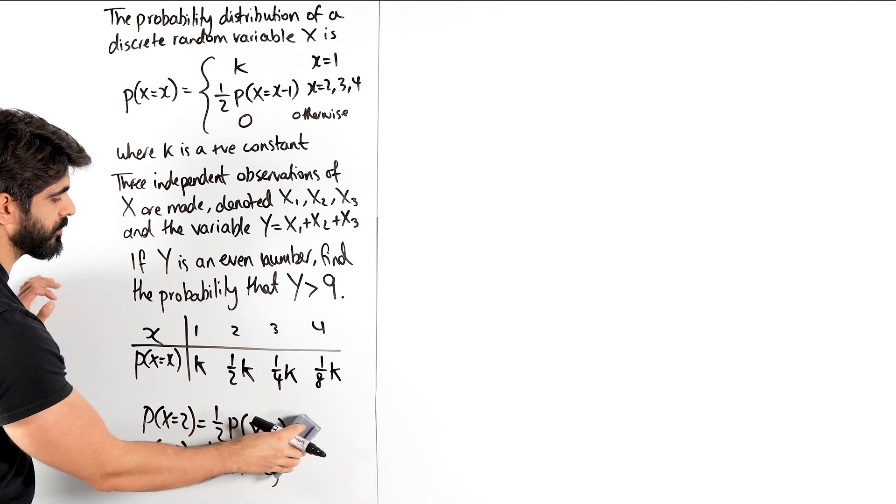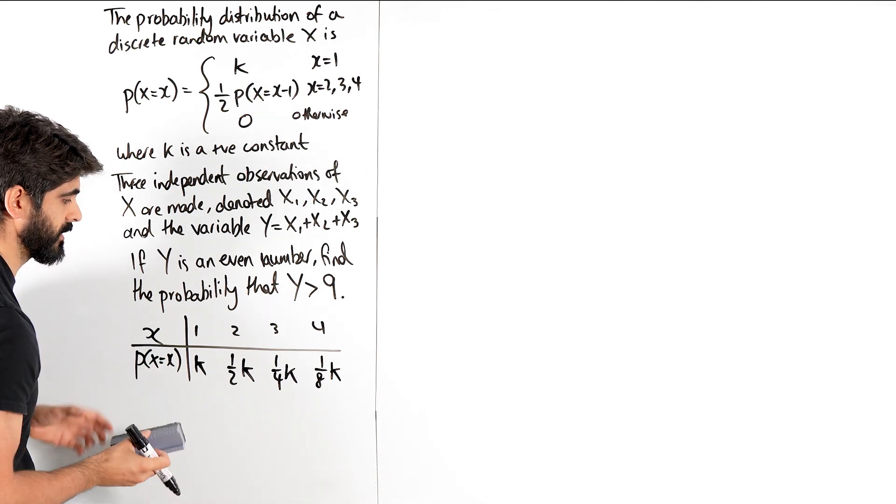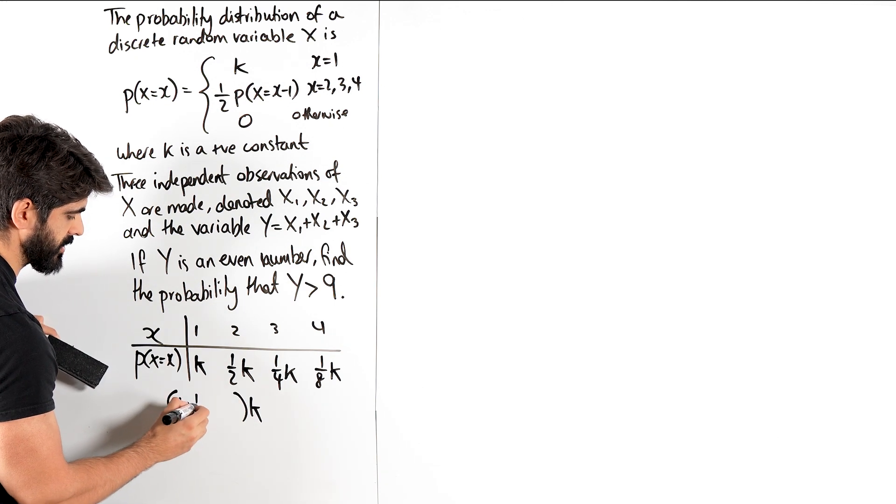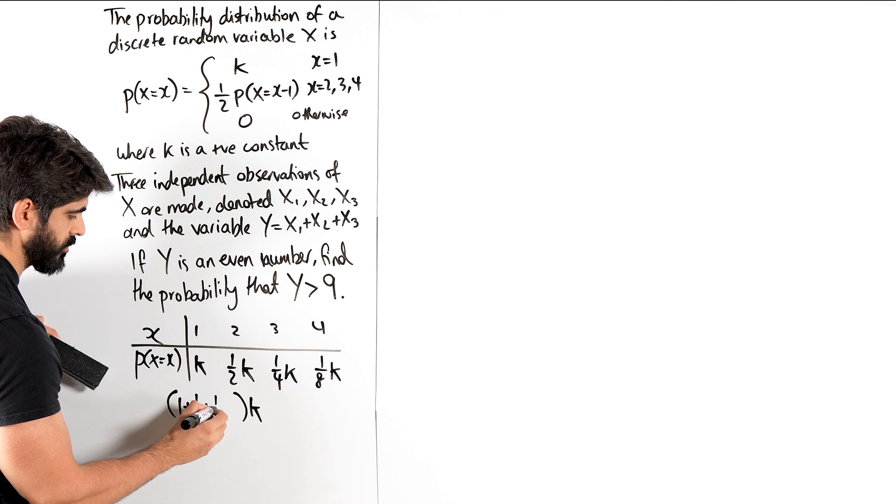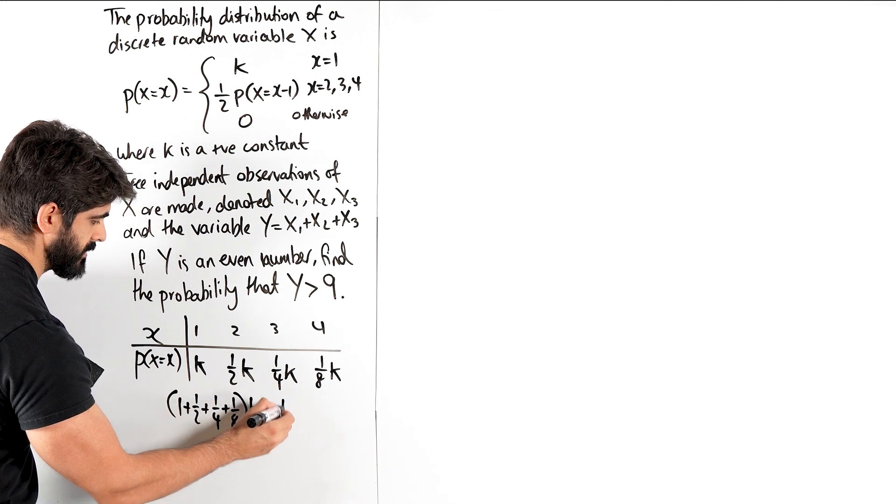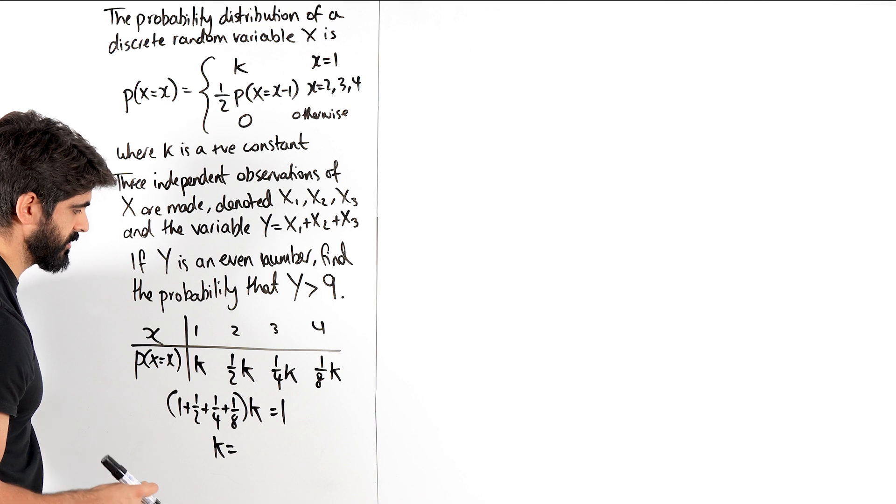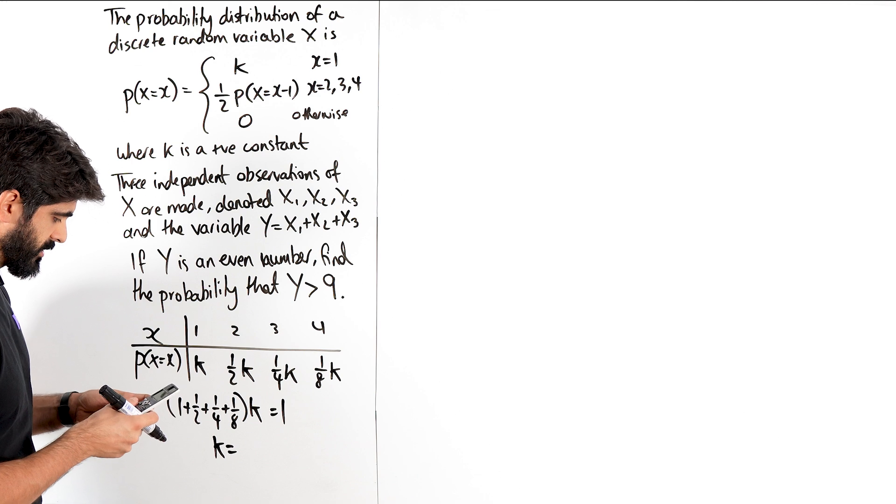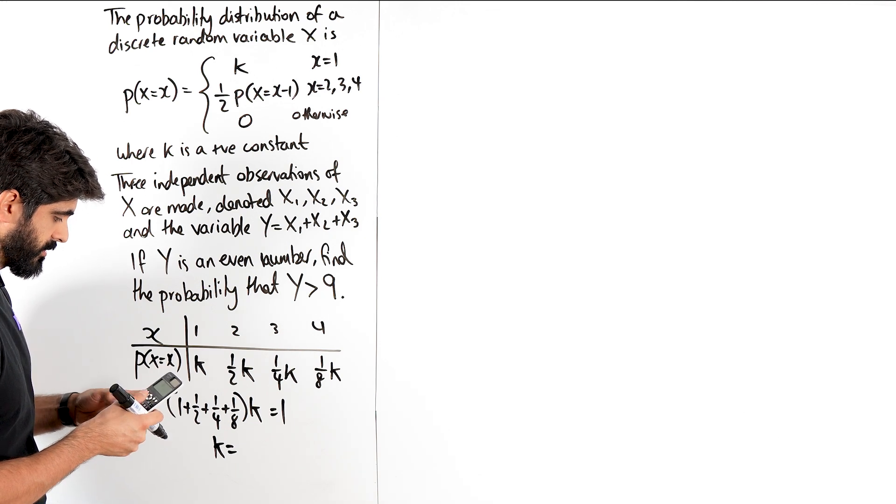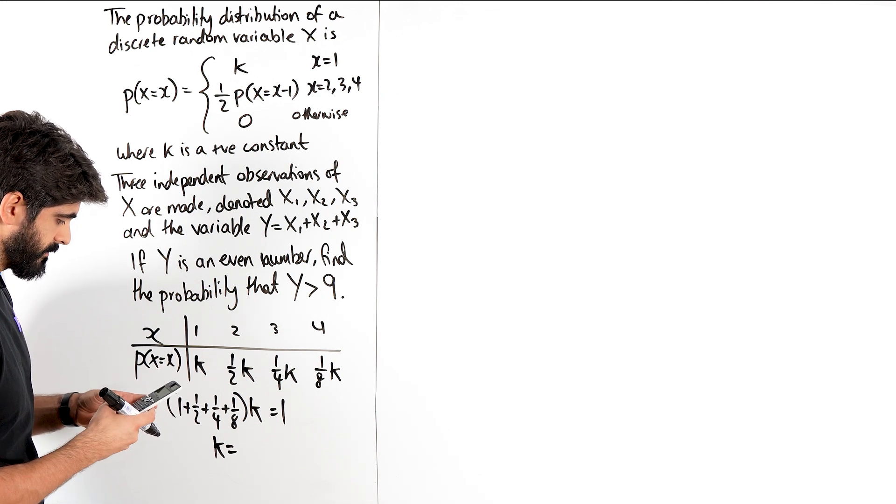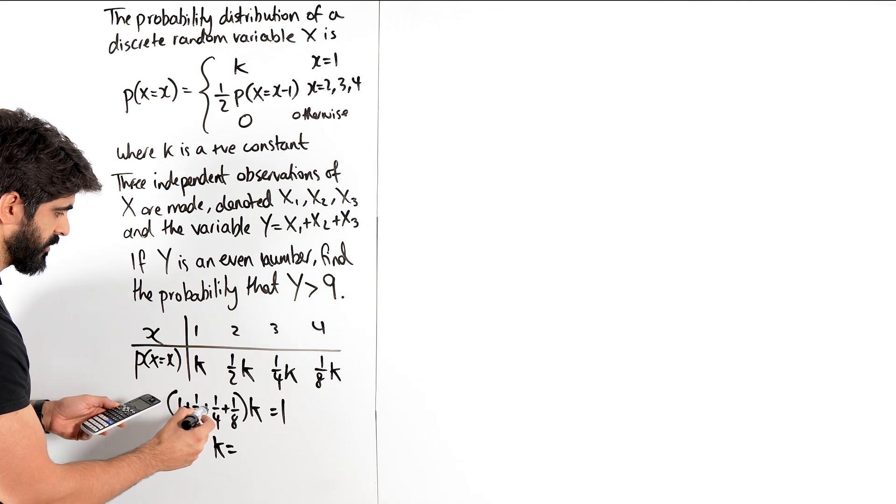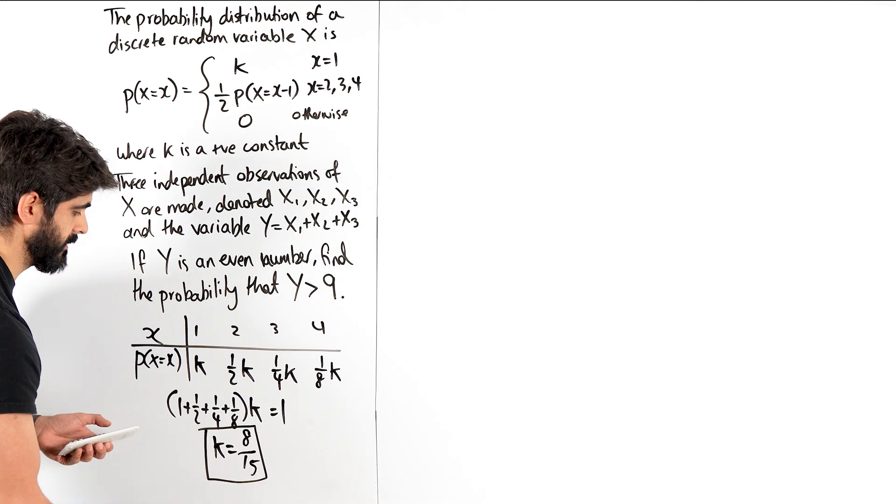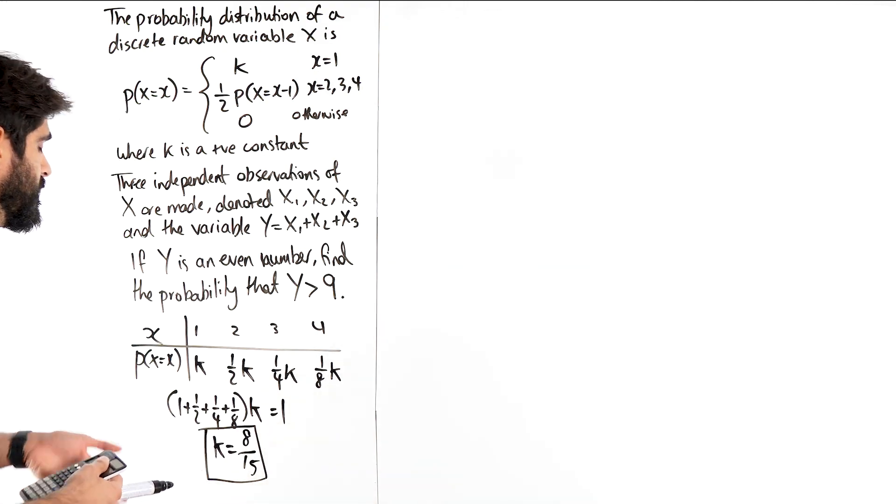We add them all up and say that it equals 1. You can basically factorize out k and take the coefficients. 1 plus 1 half plus 1 quarter plus 1 eighth equals 1. So 1 plus 1 half plus 1 quarter plus 1 eighth is 15 over 8. So 15 over 8 k is 1, so k equals 8 over 15. I'm just going to leave it like that for now, and we'll deal with that later.